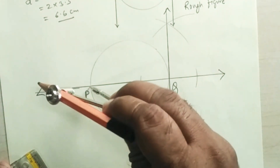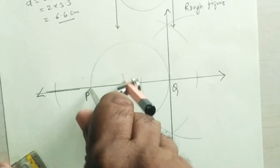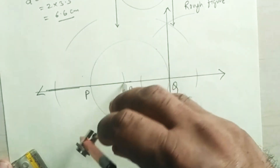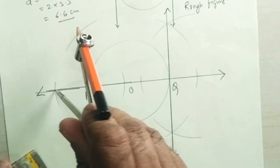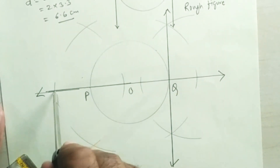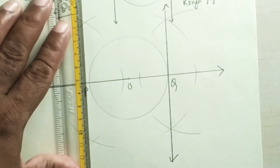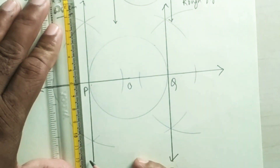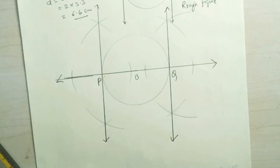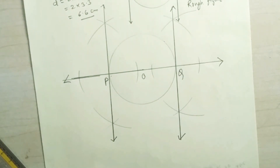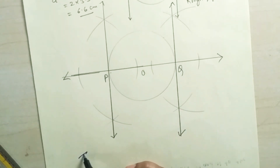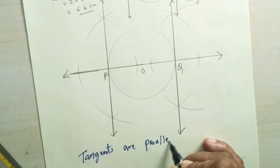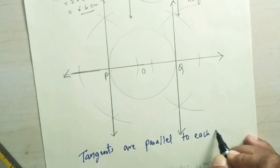Now draw another tangent passing through point P using the same procedure: one arc on left, one arc on right of point P, then take more than half the length and draw one arc above and one below, then cut the arc below the line and draw the tangent passing through point P. We observe that the two tangents are parallel to each other. Observation: tangents are parallel to each other.